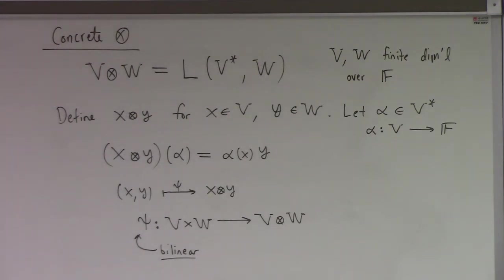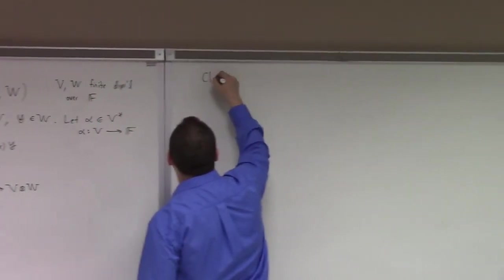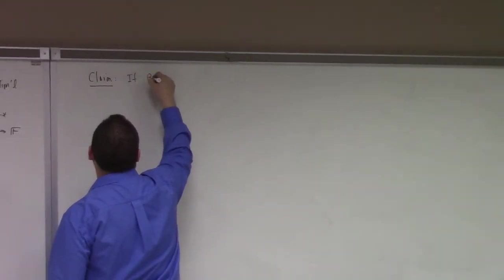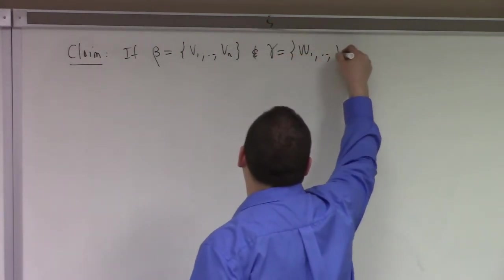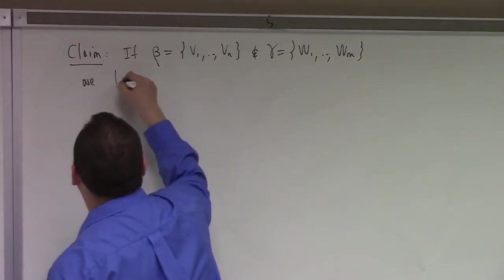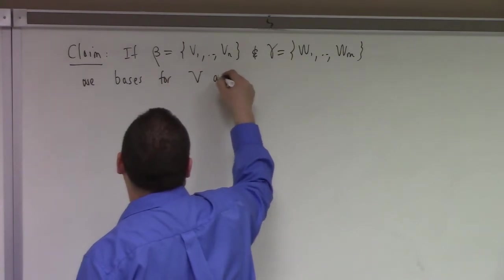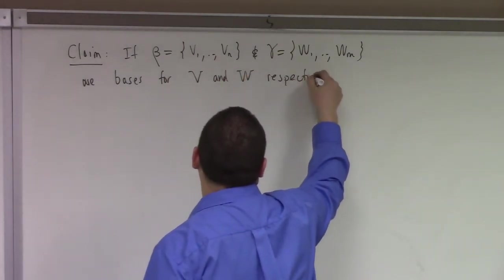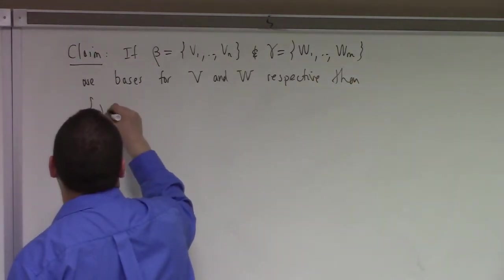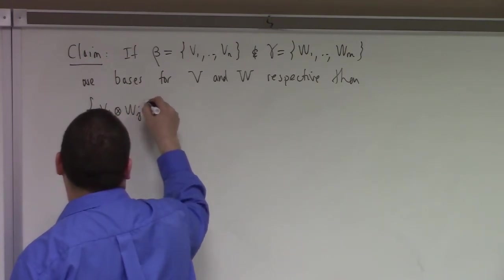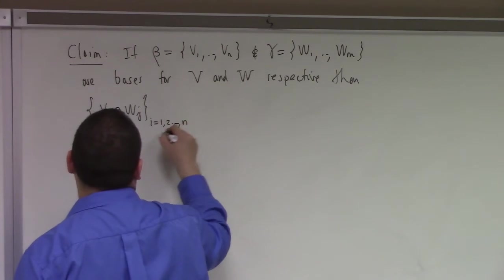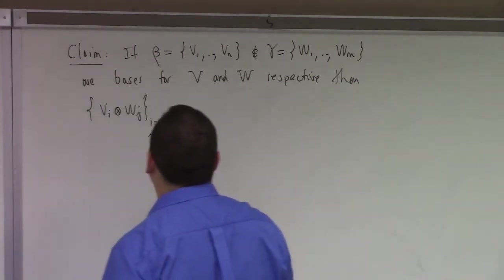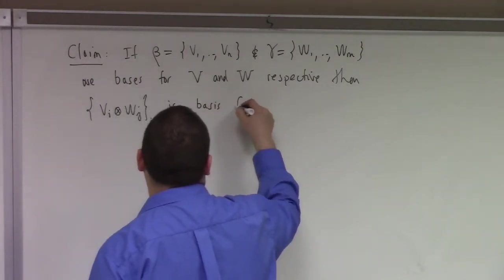I can make a simple claim: if beta equals V1, ..., Vn and gamma equals W1, ..., Wm are bases for V and W respectively, then the collection {Vi tensor Wj} for i = 1,...,n and j = 1,...,m is a basis for V tensor W.